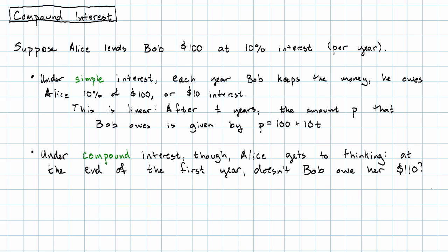Under compound interest, Alice thinks a little bit more, and she thinks to herself, at the end of the first year, doesn't Bob owe her $110? So in the first year, at the start, Bob owes her $100. And then the interest is 10% of $100, is $10. And so at the end of the year, Bob doesn't owe $100. He owes the $100 he borrowed, plus the $10 interest, is $110.